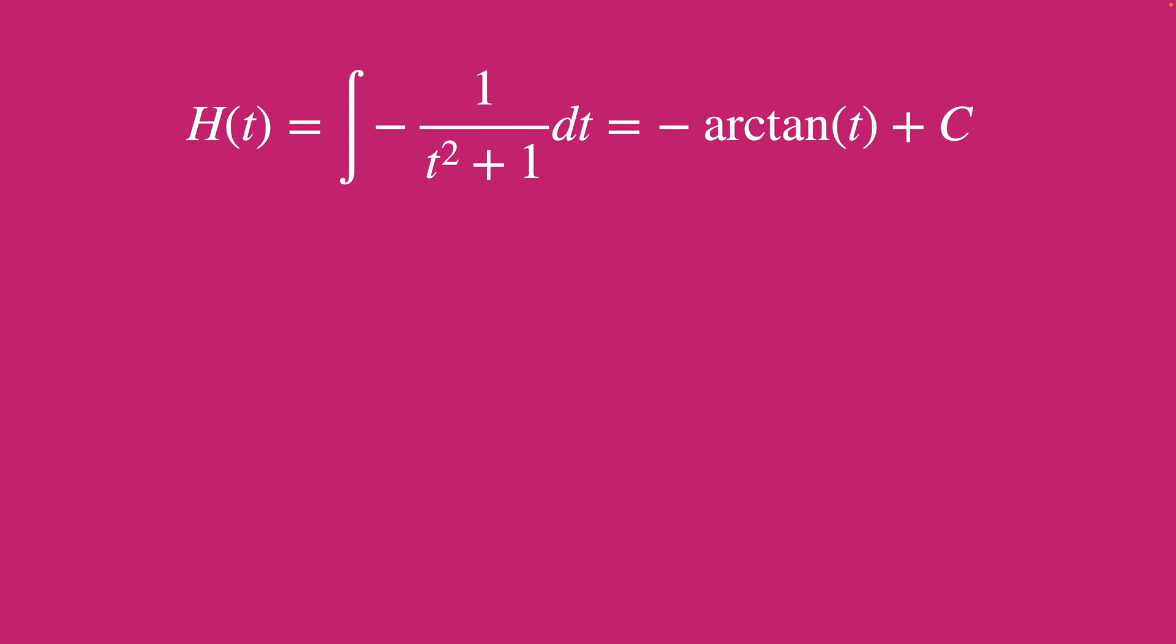Now, to find c, we look at the behavior of h of t as t approaches infinity. And since we had our e to the negative tx, we know that this limit goes to 0. And by the properties of arctan, that as t goes to infinity, arctan goes to pi over 2. And so we have c equal to pi over 2.